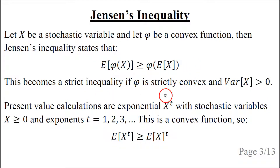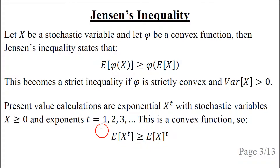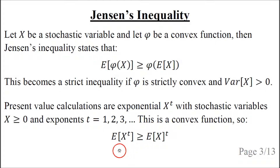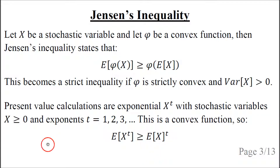Present value calculations are exponential of the form x to the power of T, where the stochastic variable x is greater than or equal to zero, and the exponents are 1, 2, 3 and so forth for the future years. And this is a convex function, so Jensen's Inequality holds. So if we take x to the power of T and take the mean of that, then it is greater than or equal to the mean of x to the power of T.